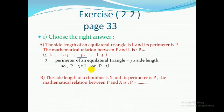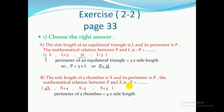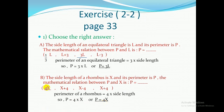Number B: the side length of a rhombus is X and its perimeter is B. What is the mathematical relation between B and X? A rhombus has four equal sides, so its perimeter equals four times the side length. Since the side length is X, the perimeter of the rhombus equals four times X, or four X. So the answer is the first option: four X.